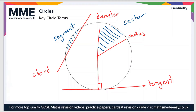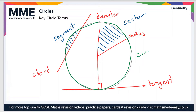Finally, the edge of the circle — the distance around the whole length of the circle — is known as the circumference.